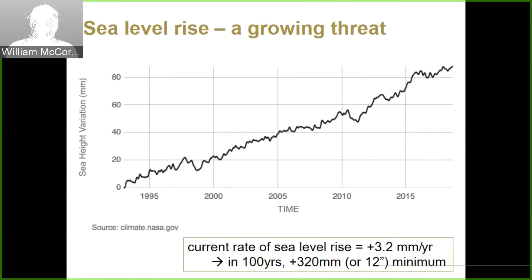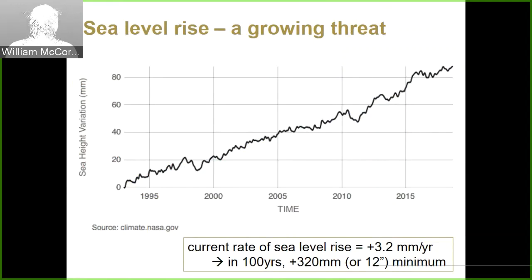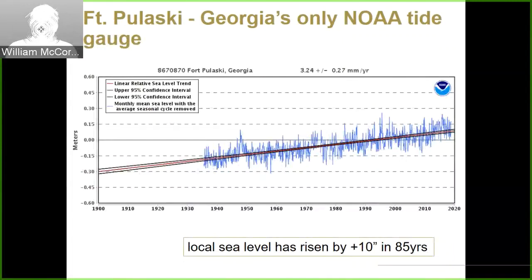Propagating this trend forward gives about 12 inches of sea level rise by 2100 — a minimum expectation for what we should plan around for coastal Georgia communities and other East Coast communities. Dialing down to the local scale, the Fort Pulaski tide gauge is Georgia's only official NOAA tide gauge, installed in 1935. It depicts a trend with more structure — storm surges and year-to-year variability — but clearly the Georgia coastline has not escaped sea level rise.